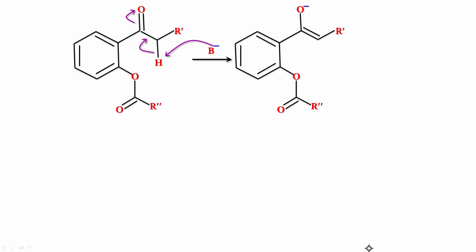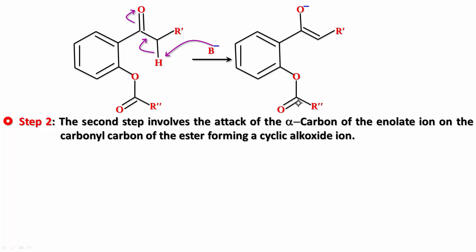In Step 2, the alpha carbon attacks the carbonyl carbon of the ester. The attack of the alpha carbon of the enolate ion occurs on the carbonyl carbon of the ester. The negative charge returns to oxygen, the pi bond shifts to the alpha carbon, the alpha carbon attacks the carbonyl carbon, and the pi bond shifts to oxygen.